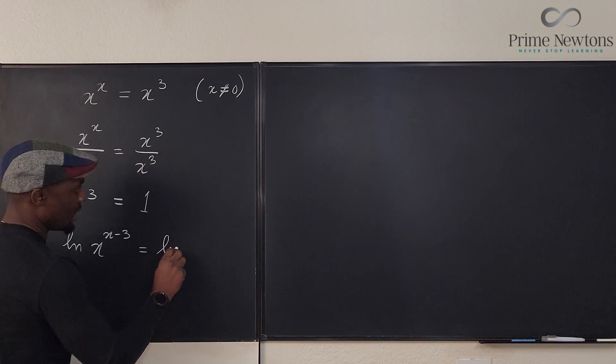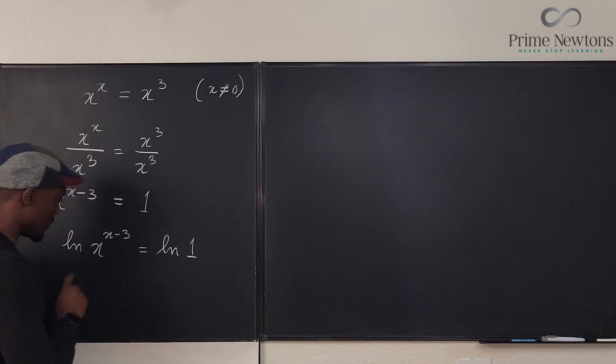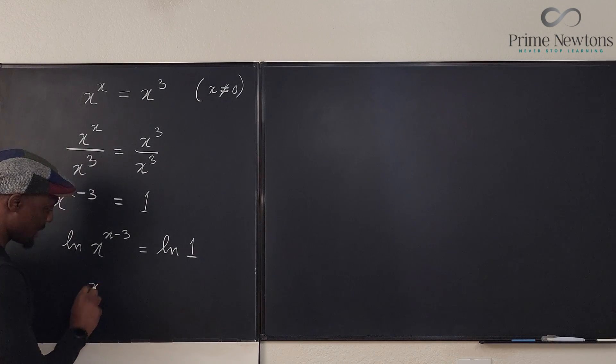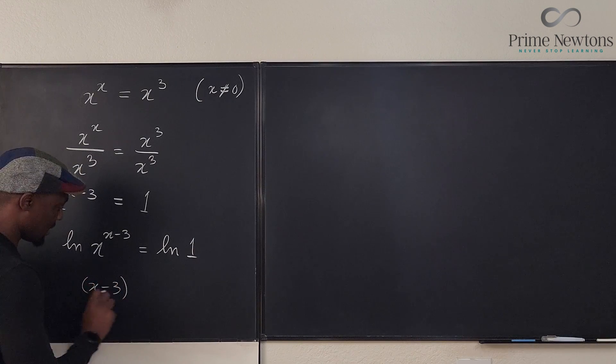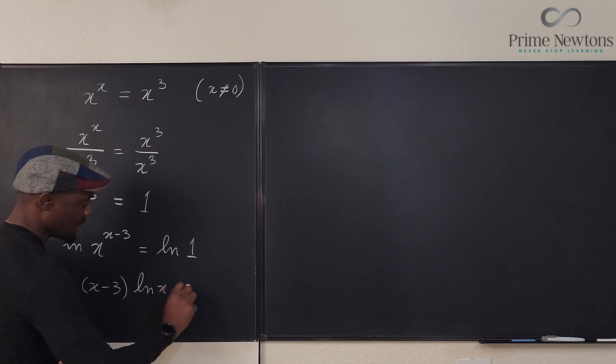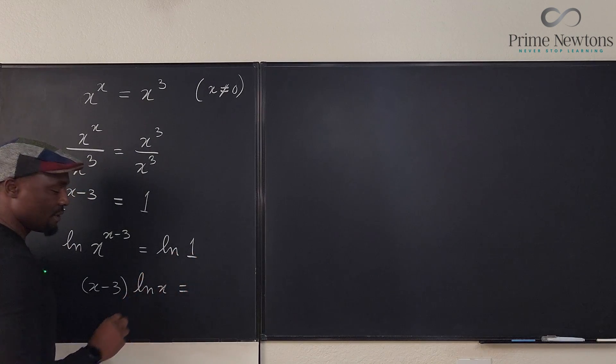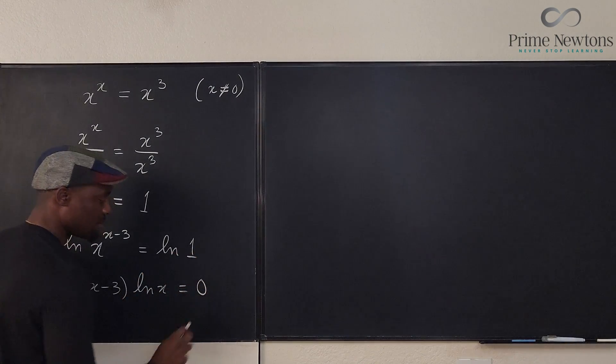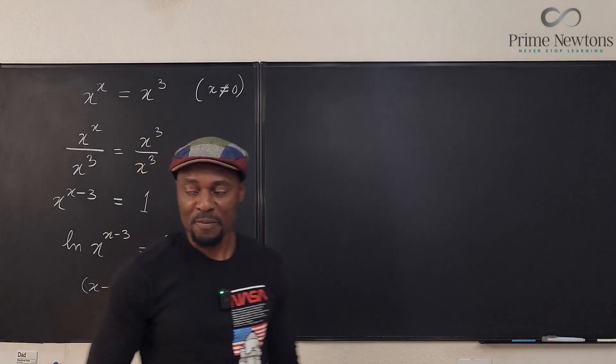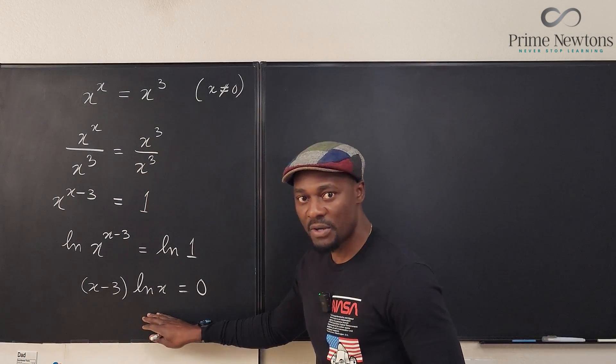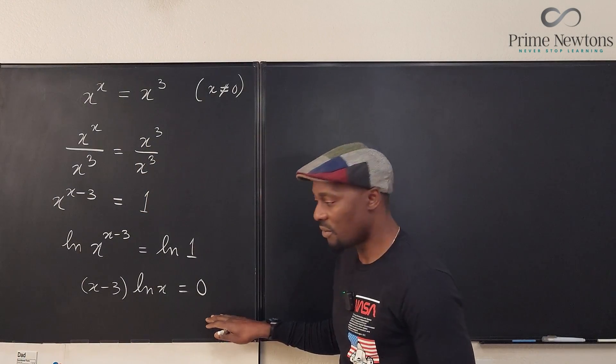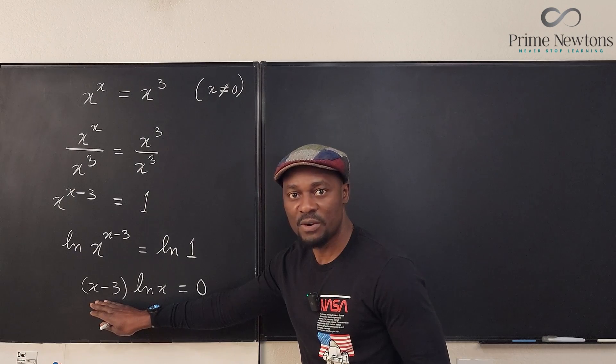And what do I get? I get x minus 3 times ln of x equals, well ln of 1 has to be zero. So I have a product of two functions that gives me zero. It means this is equal to zero or this is equal to zero or both of them are equal to zero.